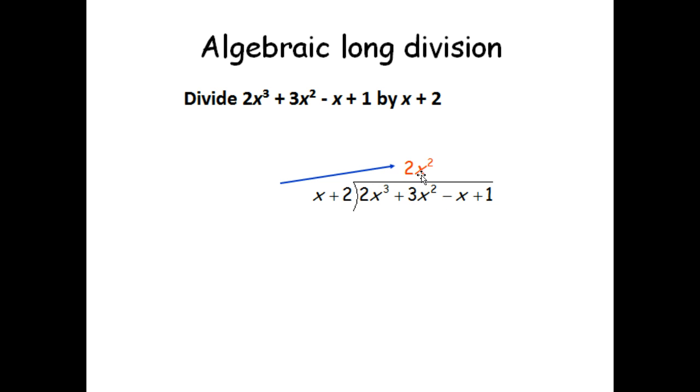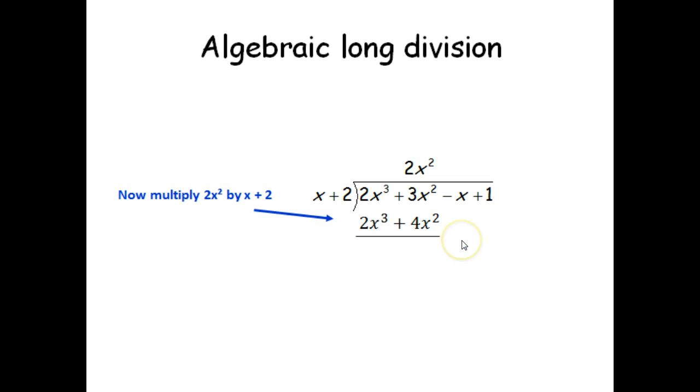Now we say, 2x squared, we have to multiply that by each portion here, x and positive 2. So 2x squared times x, we'll write it underneath here, is 2x cubed. Then 2x squared times 2 is 4x squared. So 2x cubed plus 4x squared.